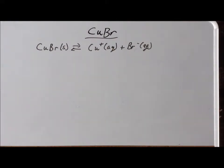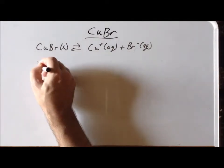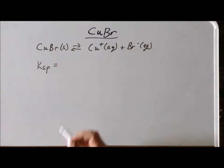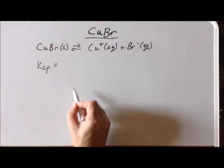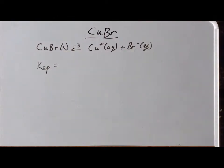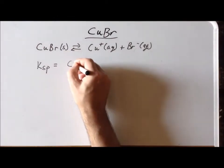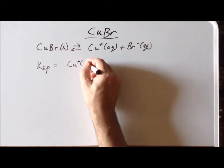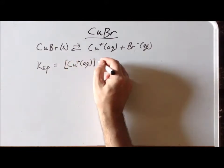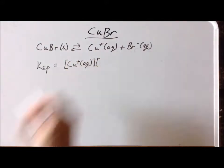What we'd like to do now is write the solubility product — the equilibrium constant — for this particular reaction. Following what we know about writing equilibrium constants in general, recall that the products end up in the numerator and the reactants in the denominator. So our first part is to write the copper plus 1 aqueous term. Anywhere we have a product, when we write the equilibrium constant, we write it as such.